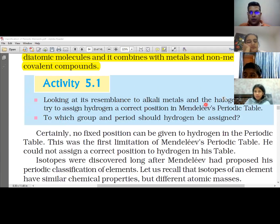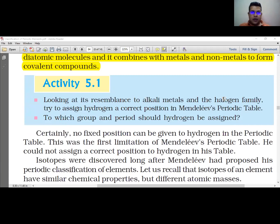Activity 5.1: Looking at its resemblance to alkali metals and the halogen family, try to assign hydrogen a correct position in Mendeleev's periodic table.